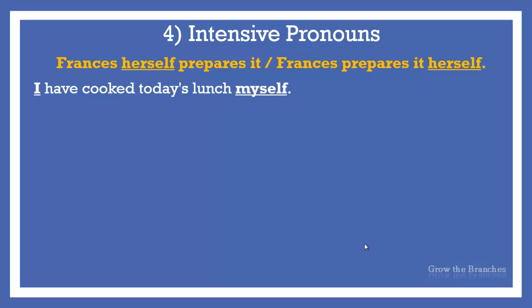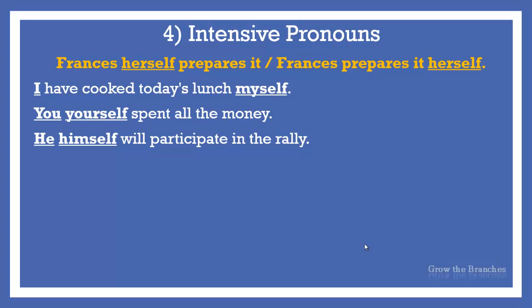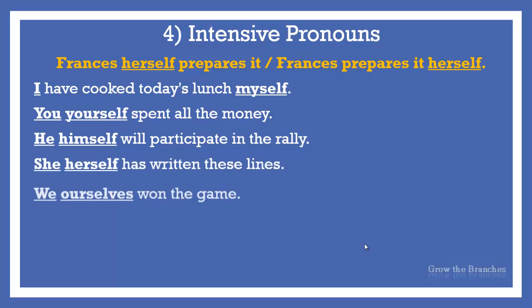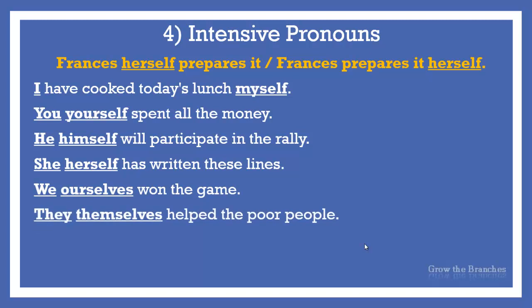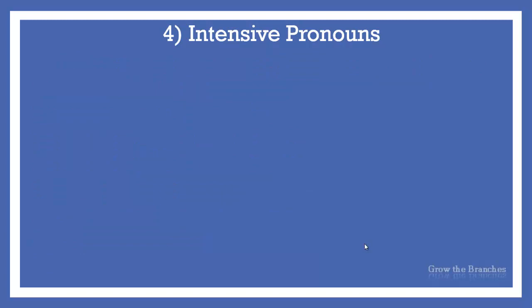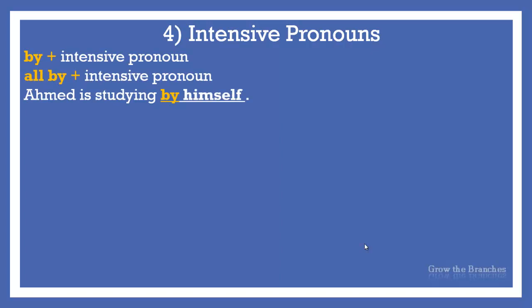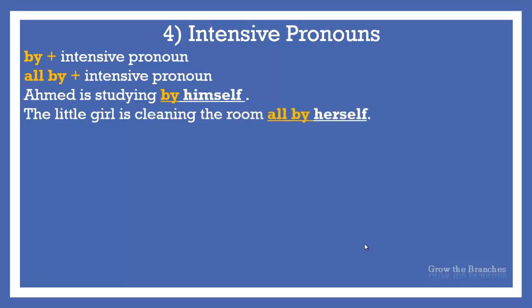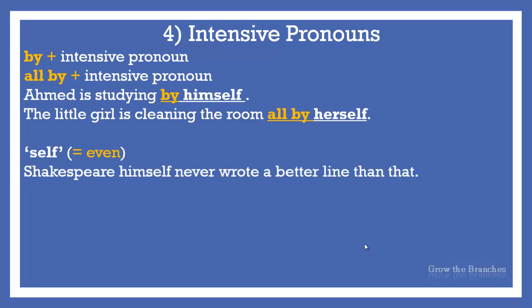Consider the following examples: I have cooked today's lunch myself. You yourself spent all the money. He himself will participate in the rally. She herself has written these lines. We ourselves won the game. They themselves helped the poor people. Have you written this book yourself? Sometimes when the pronouns have the meaning of without assistance, we can also use or add by or all by. For example: Ahmed is studying by himself. The little girl is cleaning the room all by herself. Remember, sometimes the self pronoun can have the meaning of even — Shakespeare himself never wrote a better line than that.